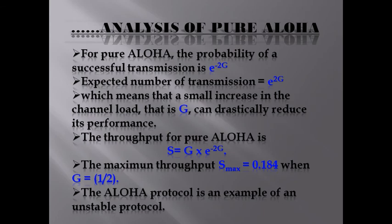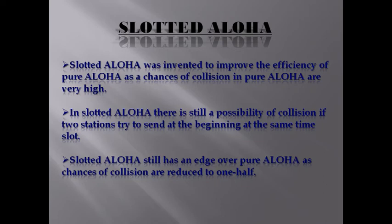For Pure ALOHA, the probability of a successful transmission is e^(−2G). The expected number of transmissions equals e^(2G), meaning a small increase in channel load G can drastically reduce performance. The throughput for Pure ALOHA is S = G × e^(−2G). The maximum throughput S_max equals 0.184 when G = 1/2. The ALOHA protocol is thus an example of an unstable protocol.